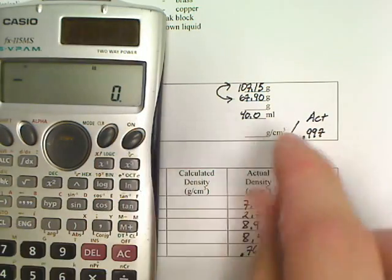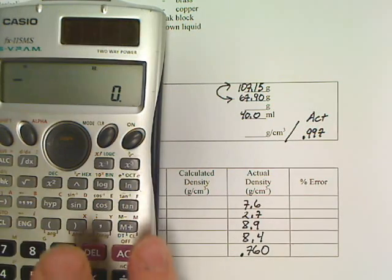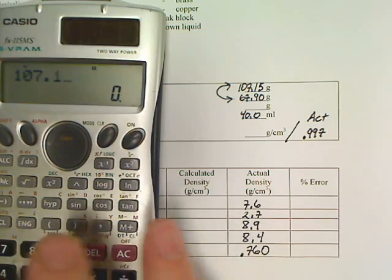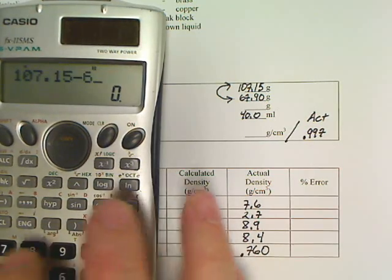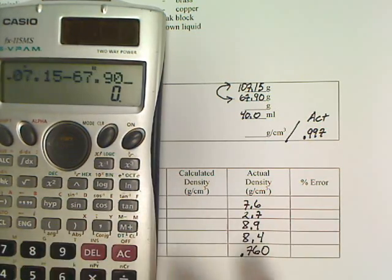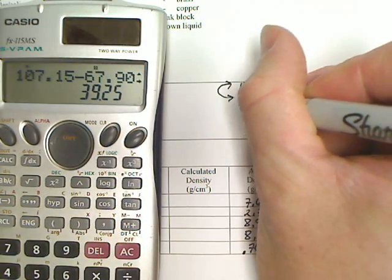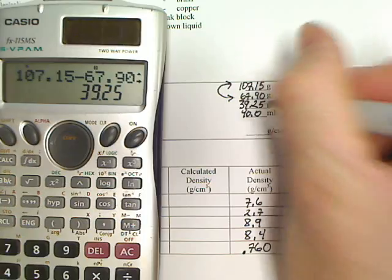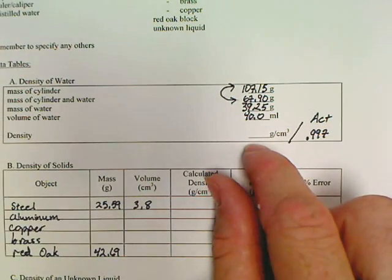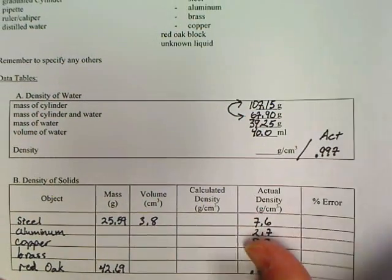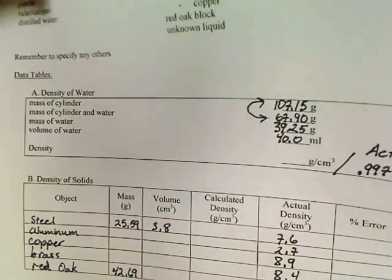For me, I'm going to subtract the difference between those two lines: 107.15 minus 67.90, and that's going to be 39.25. Now, the one other thing that I need to do is find a density. I'm going to go make a calculation page.